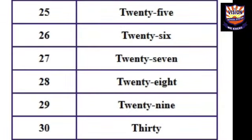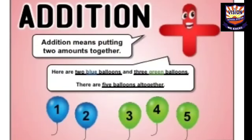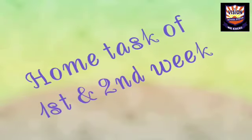Now let's discuss the last one: addition within 10. Addition means putting two amounts together. Here are 2 blue balloons and 3 green balloons, so together there are 5 balloons altogether. For more practice, you need to solve worksheets and copy work.